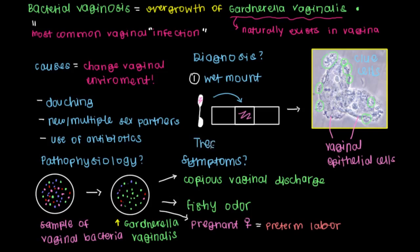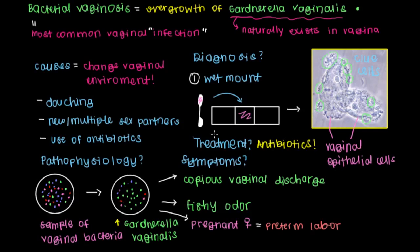Now that we've made our diagnosis, the next step would be treatment. Because Gardnerella vaginalis is a bacterium, you would treat it with antibiotics to decrease the amount of Gardnerella vaginalis in the vagina and return to the normal population of bacteria that should be there. The next question is: how do you prevent BV from happening in the first place?